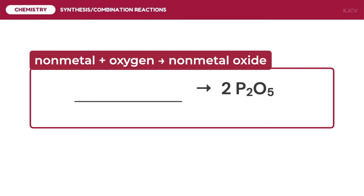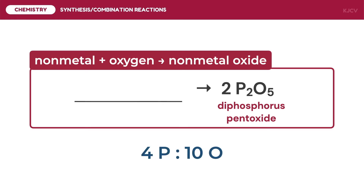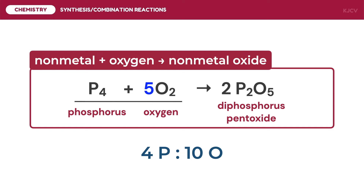For the next example, we identify reactants that form 2 moles of diphosphorus pentoxide. This product has a ratio of 4 phosphorus atoms for every 10 oxygen atoms. Phosphorus is tetraatomic (P₄) and oxygen is diatomic (O₂), giving an initial 4-to-2 ratio. We balance by using 5 as a coefficient of oxygen. The complete reaction is 1 mole of P₄ reacting with 5 moles of O₂ to form 2 moles of diphosphorus pentoxide.